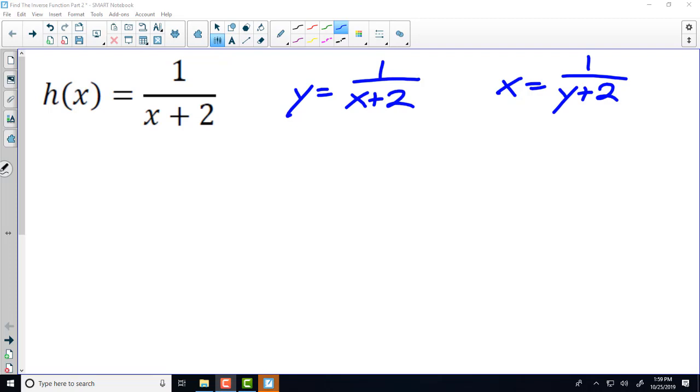Now that is the most important step in finding the inverse, but to finish this up we have to solve it for y. So we're going to take this x equals 1 over y plus 2 and get rid of the fraction by multiplying both sides of the equation by y plus 2. That will give us on the left-hand side x times y plus 2, and on the right-hand side it will just give us a 1.